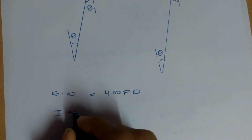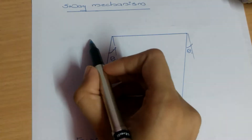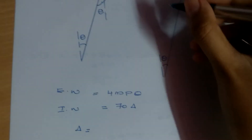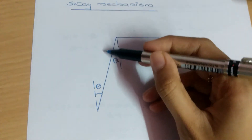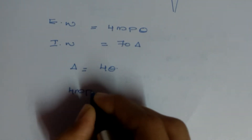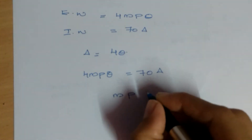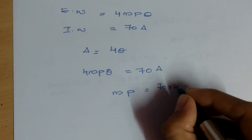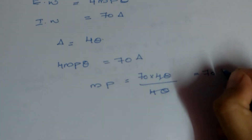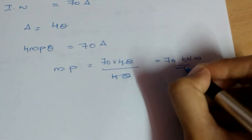The external work done is due to the force of 70 kN, so it equals 70 × delta. Delta equals the height of the frame, which is 4 meters, so delta equals 4θ. Equating external work done to internal work done: 4MP·θ = 70 × 4θ. Theta cancels, giving MP = 70 kN·m. This completes the sway mechanism analysis.